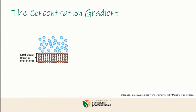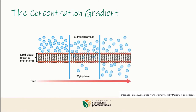An important characteristic of passive transport is that it doesn't require energy — it's free. Because of that, molecules can only flow down from high concentration to low concentration until the concentration is the same on both sides of the membrane. In other words, it is impossible to force them against their concentration gradient.